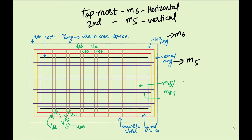Similarly, tapping will also happen in the purple layer, which will be either M4 or M6 — the topmost or second-to-topmost horizontal layer. There will be via dropping happening here. Since the inner ring is ground, this is your ground tapping, and the other is your power tapping. The ring is the routing that runs between the die-to-core spacing.